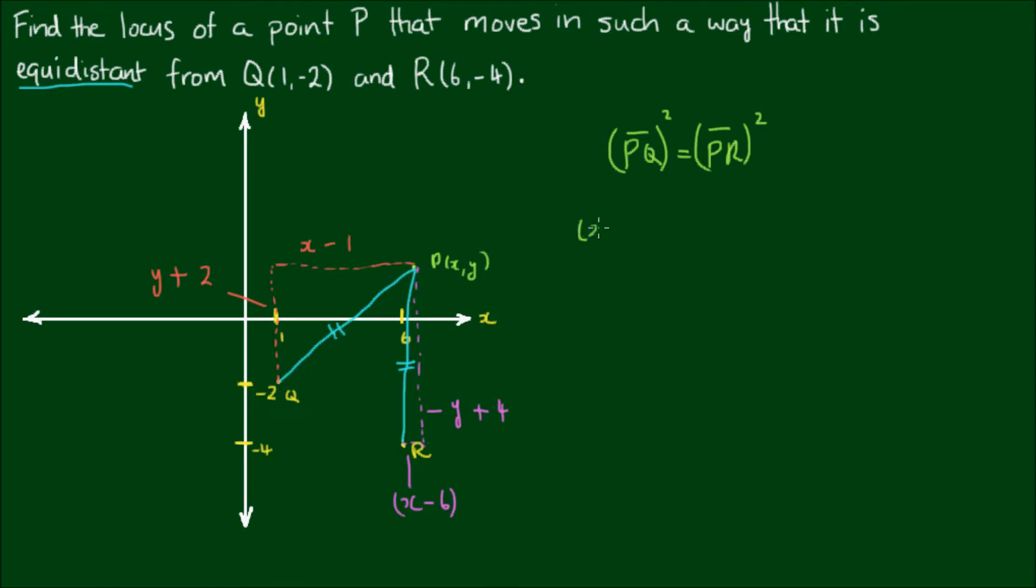PQ² = (x-1)² + (y+2)². And PR² = (x-6)² + (y+4)². And expanding each of these terms out, on the left-hand side, I'll get x² - 2x + 1 + y² + 4y + 4. On the right-hand side, I'll get x² - 12x + 36 + y² + 8y + 16.